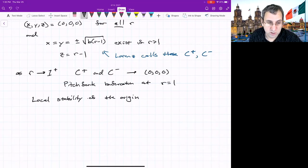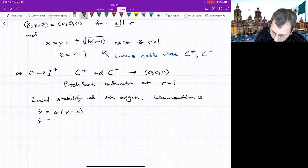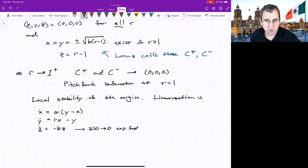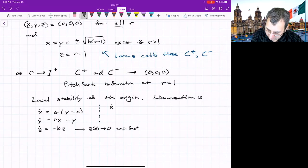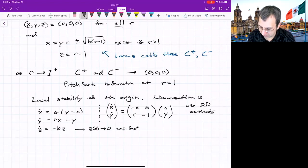We could look at the linearization. You could just read it off by ignoring the two quadratic terms. So we get x dot equals sigma(y minus x), y dot equals rx minus y, and z dot equals negative bz. We've just ignored the quadratic terms because we're linearizing. So z is particularly easy. This would give us z goes to 0 exponentially fast because b is positive, which means we just have to analyze the x, y part.